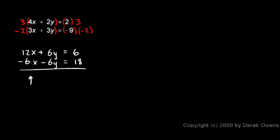In the first column here, 12x and minus 6x adds up to 6x. In the second column, the 6y and the minus 6y cancel each other out. So I can say plus 0 right there, or I can just leave it blank. And 18 plus 6 adds up to 24.